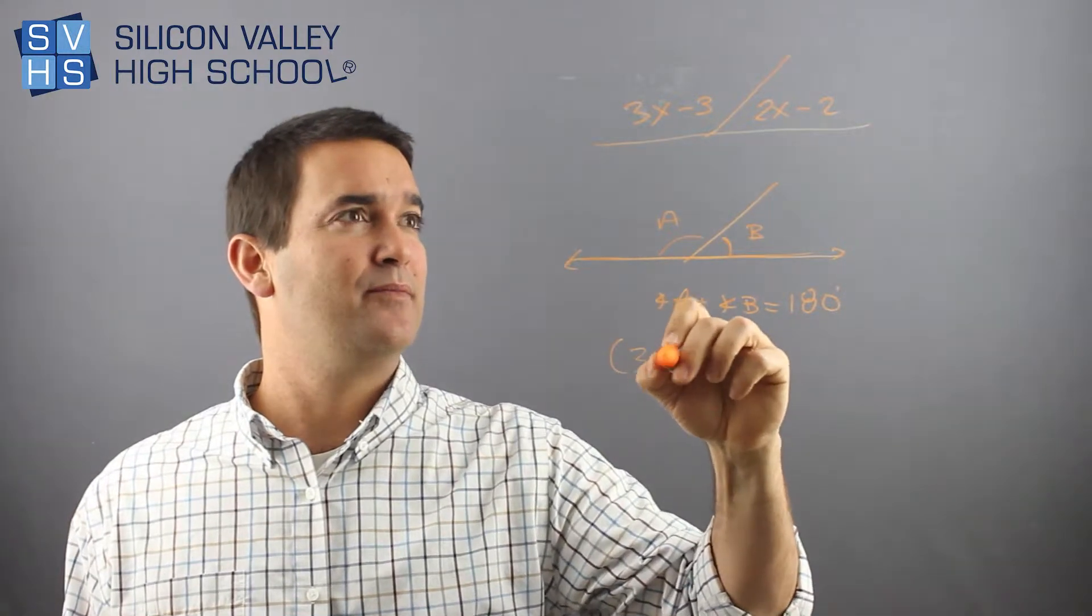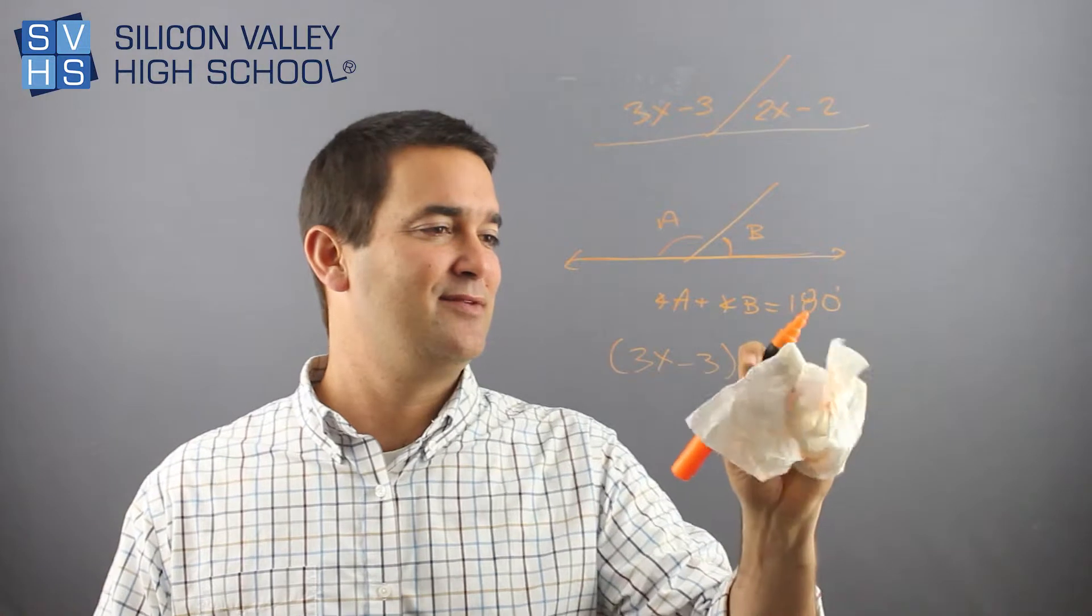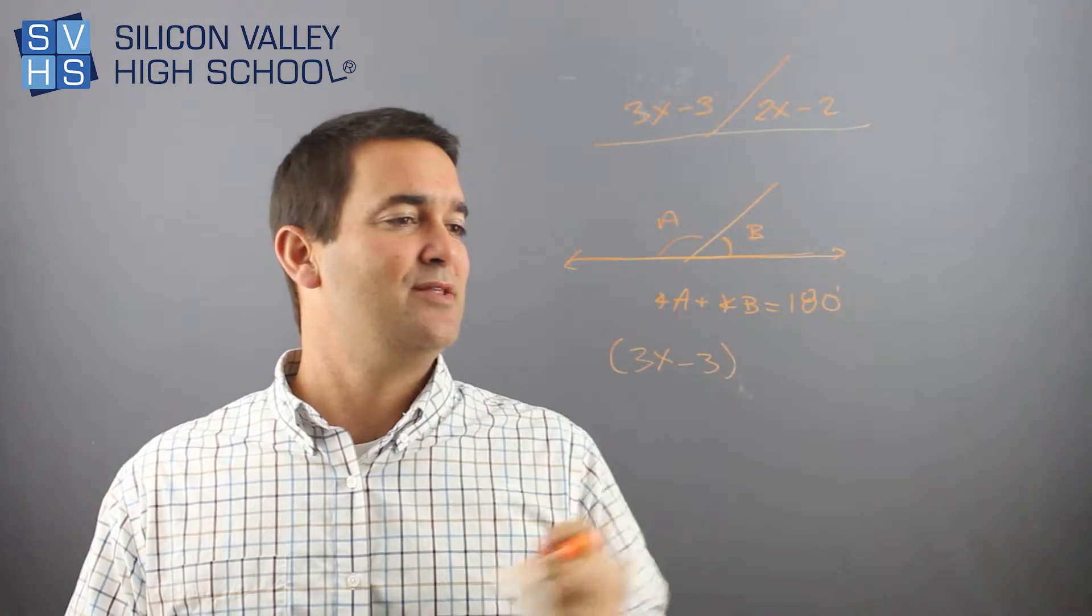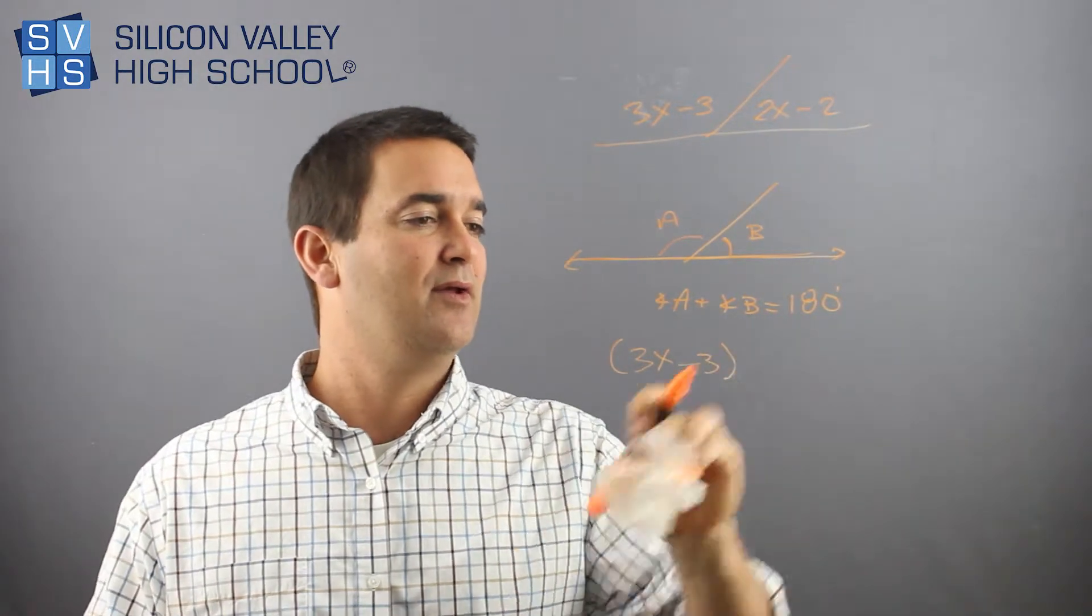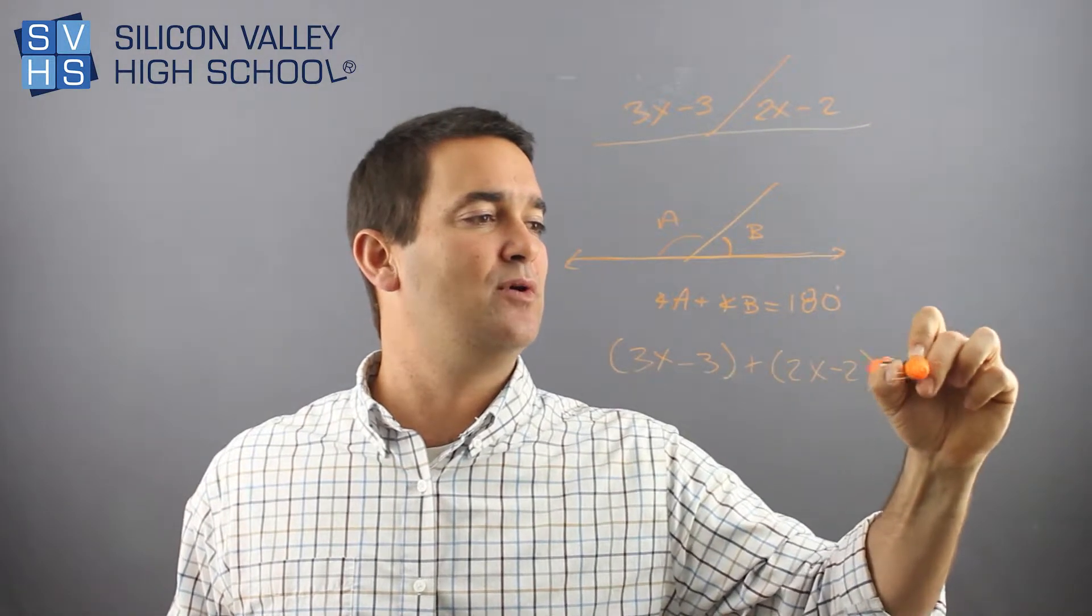In this case, all you would do is say, 3x minus 3 plus—not times—2x minus 2 has to equal 180.